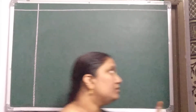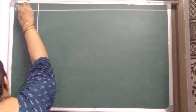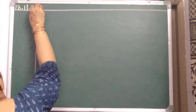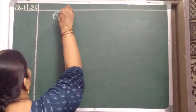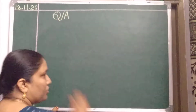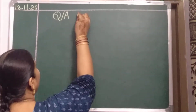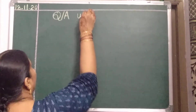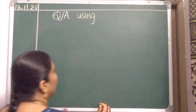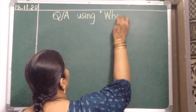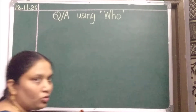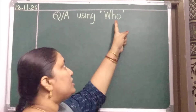Take out your English notebooks. Here you should write the date — the date is 18.11.20. In the first line, write Q oblique A, which means question and answer. We are going to write question and answer. Take a finger gap and write U-S-I-N-G, 'using'. In inverted commas, write W-H-O, 'who'. We are going to write question and answer using 'who'.